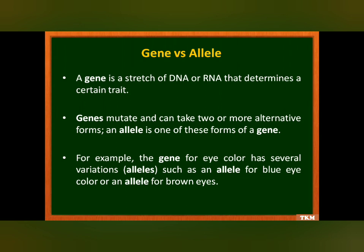To understand gene therapy fully, we need to understand the difference between a gene and an allele. A gene is a stretch of DNA or RNA that determines a certain trait. Genes can mutate and take two or more alternative forms — an allele is one of these forms of a gene. For example, the gene for eye color has several variations, such as an allele for blue eye color and an allele for brown eye color.